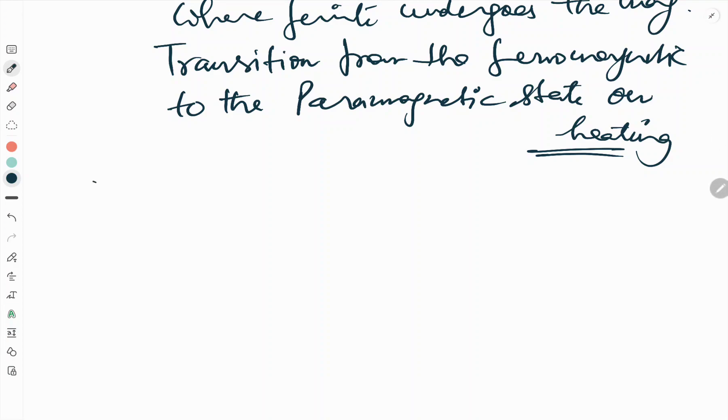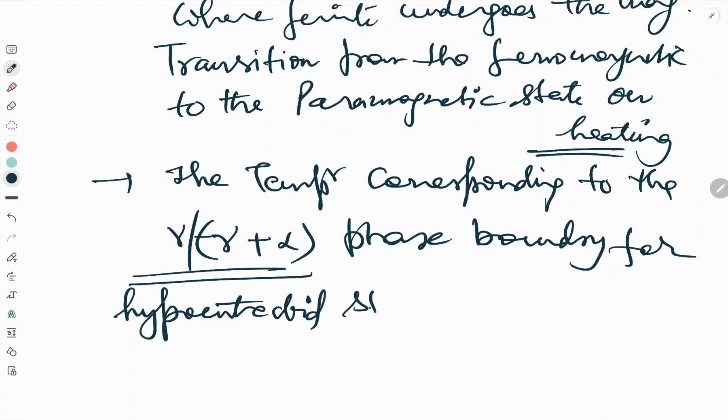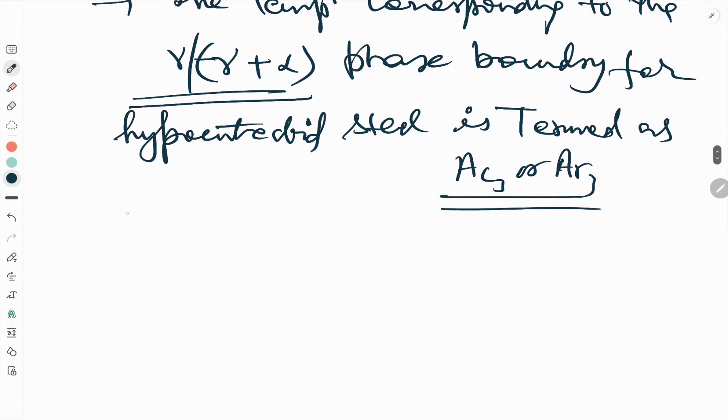Now we will talk about other temperatures. The temperature corresponding to the gamma and gamma plus alpha boundary, this phase boundary for hypoeutectoid steel is termed as AC3 or AR3.